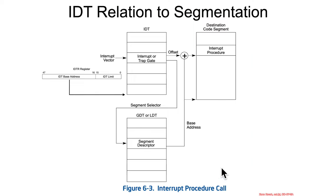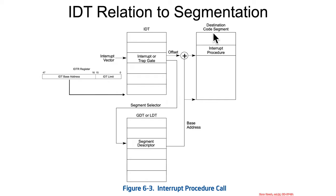So the IDT's relation to segmentation, as already mentioned in the previous section, is that there's effectively a logical address — a far pointer — inside the IDT. That far pointer is going to have a segment selector that selects something from the GDT, but because this is interrupt code execution going somewhere else in an interrupt procedure, the base is always zero, but the access control stuff is still checked.